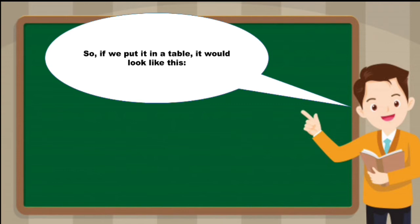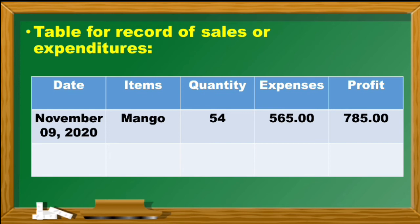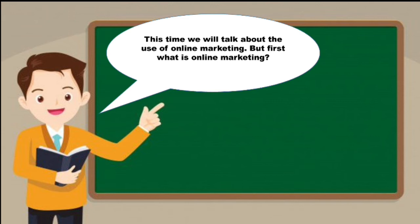So if we put it in a table, it would look like this: table for record of sales or expenditures - date, items, quality, expenses, and profit. Great job! We now know how to keep an updated record of our sale.